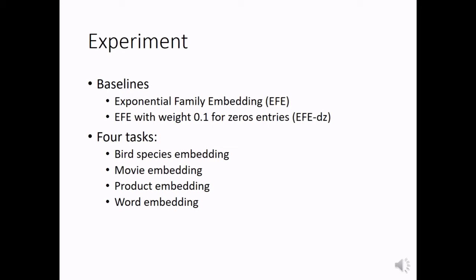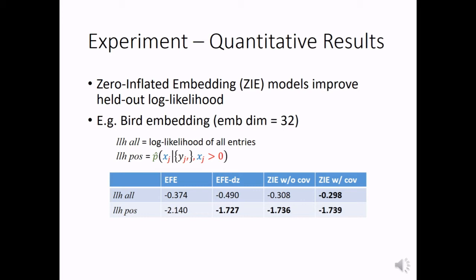Let's first see some quantitative results. In general, our zero-inflated embedding models improve the held-out log likelihood. Here, we calculate two types of log likelihood: one for all entries, the other one for positive entries only. From the results of bird embedding here, we can see that our models improve the log likelihood of all entries significantly.